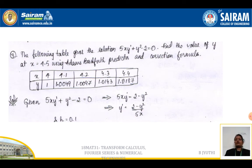Now the following table gives the solution of 5xy' + y² - 2 = 0. Find the value of y at x = 4.5 using Adams-Bashforth predictor and corrector formula. The table has been given: x₀, x₁, x₂, x₃, x₄ and y₀, y₁, y₂, y₃, y₄. The next value y₅ has to be computed.